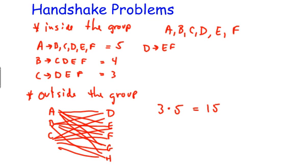Person D would shake hands with E and F, which is two handshakes, and E would just shake hands with person F, which is one handshake. F has already now shook hands with everybody, so we're done. So you just do five plus four plus three plus two plus one, which turns out to be 15 handshakes. So you've got six people inside the group. How many ways can they shake hands with each other? The answer is 15.